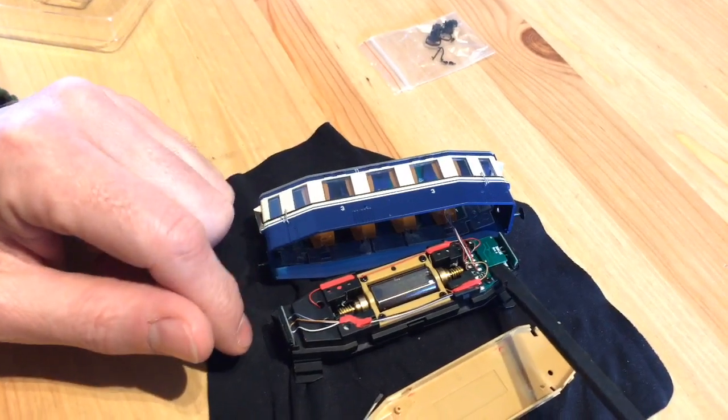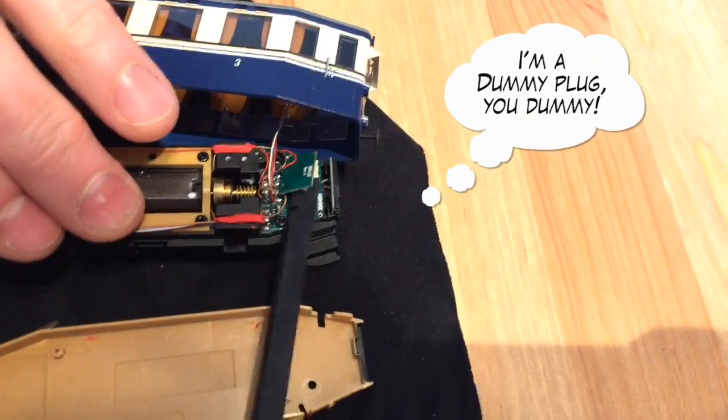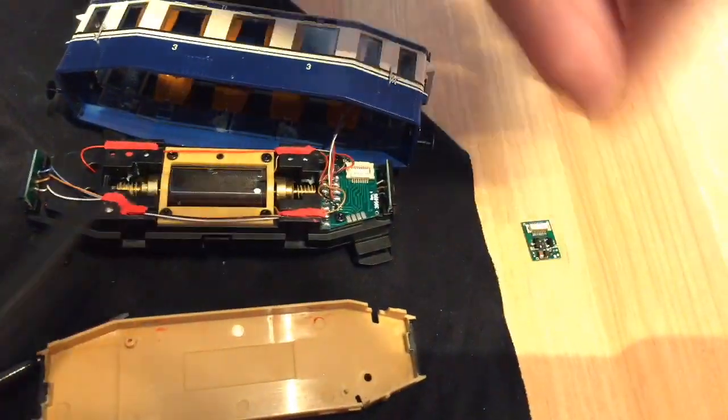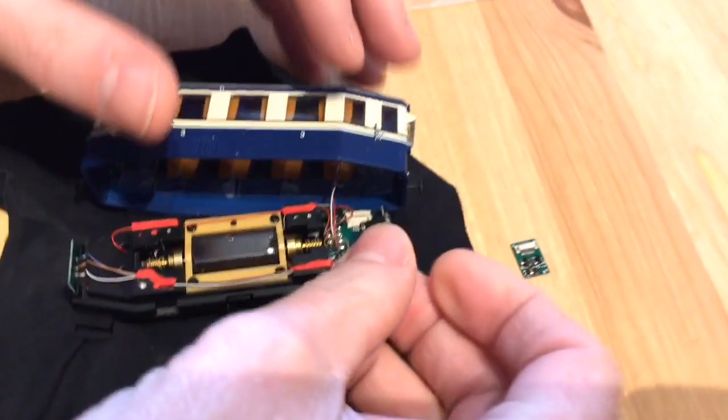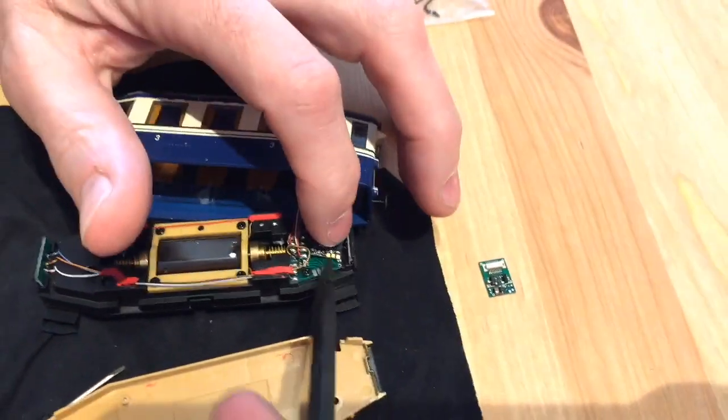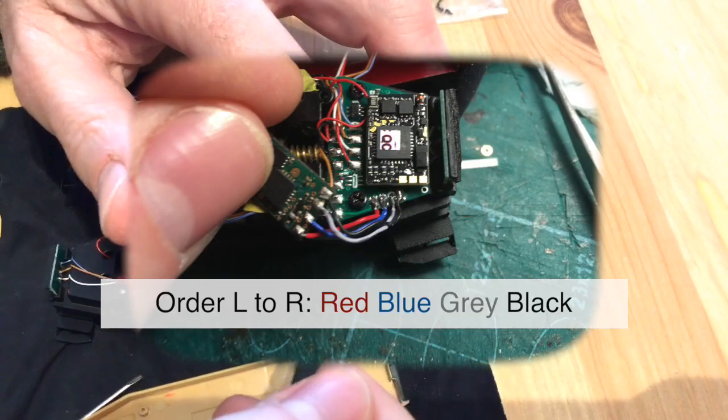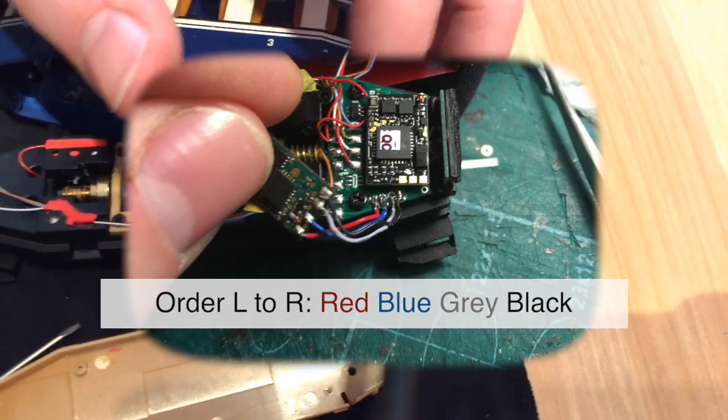There you go. So, here's the decoder. It's a Next18 decoder. And I have a Traynomatic decoder. On the board as well, you see four connectors. These four connectors are to connect sound to it.